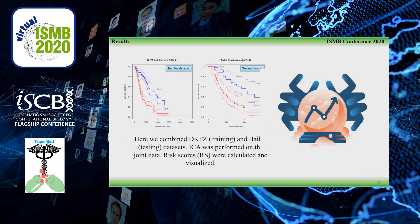In the last step, we combined the KFZ training dataset and Bailey testing dataset. ICA was performed on the joint data. Risk scores were calculated and visualized. This approach gives us an instrument to predict the survival of new groups of patients.